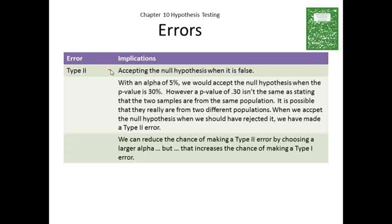Now, when we accept the null hypothesis when we should have rejected it, when we state the two samples are from the same population when in fact they're not, we have made the Type 2 error.